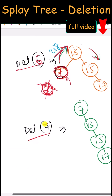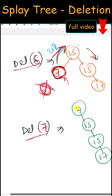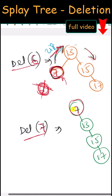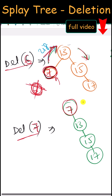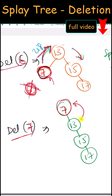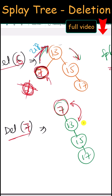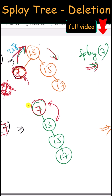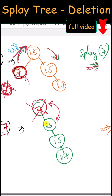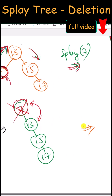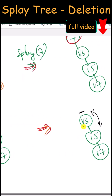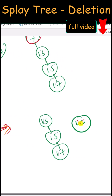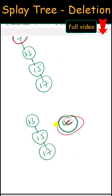Let's delete node 7, which is the root node. It has only one child, so we replace it with that child and delete the node. Because the node has no parent, we do not have to perform any splaying. This is our final output.